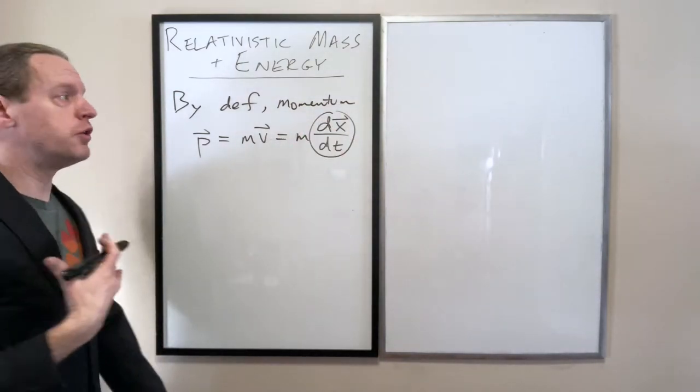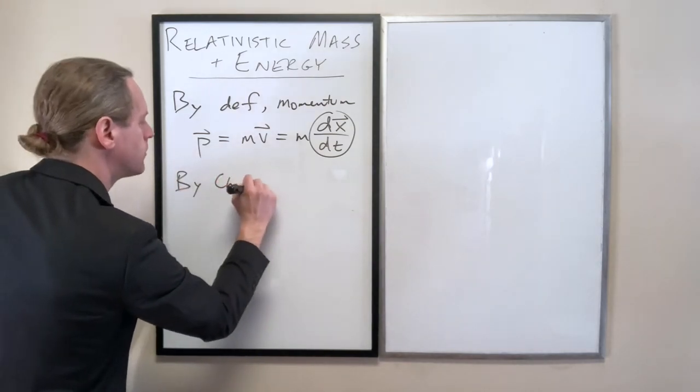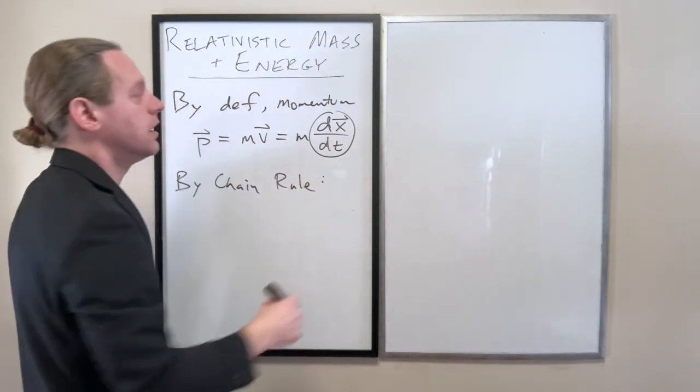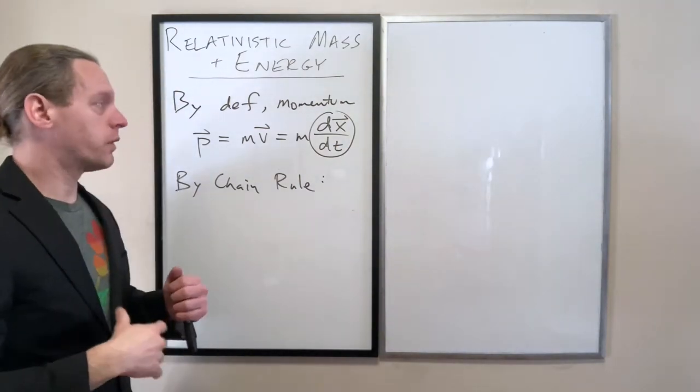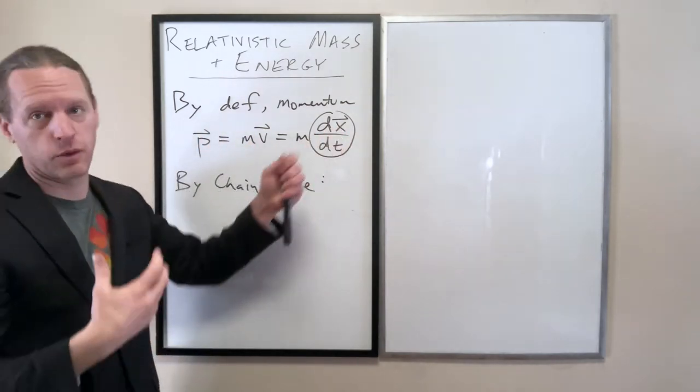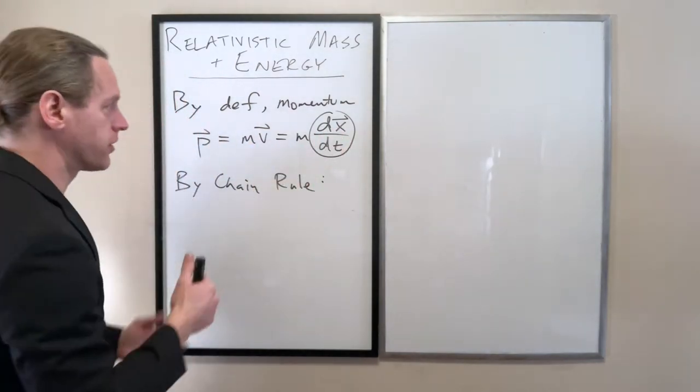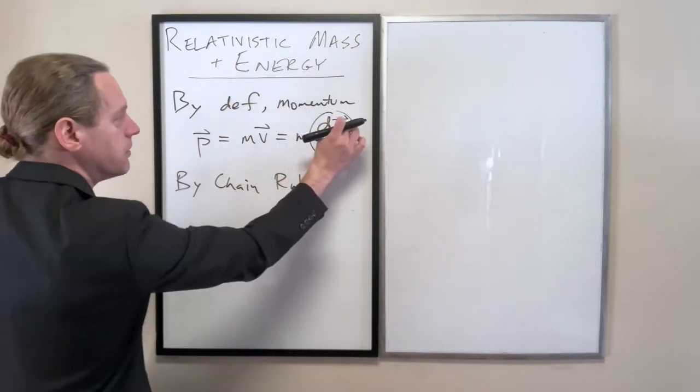If we want to, sorry, by the chain rule. Let's say that we are in a reference frame S prime, where we have X primes and T primes, and we know how to relate them to this. In other words, another inertial reference frame. And let's just go ahead and differentiate here.